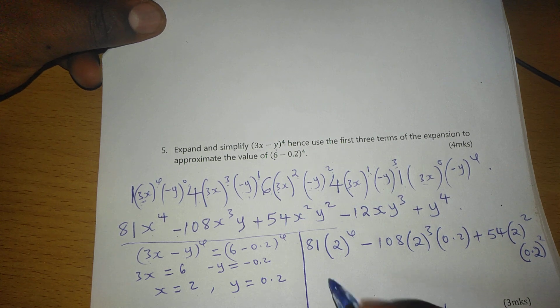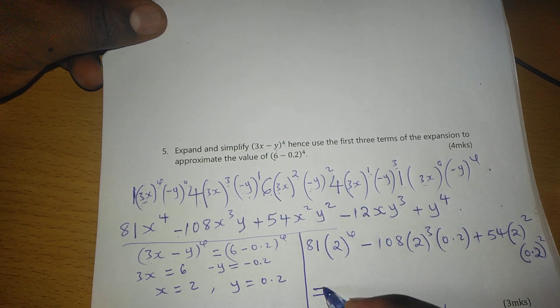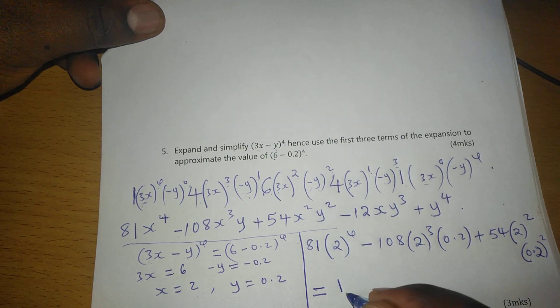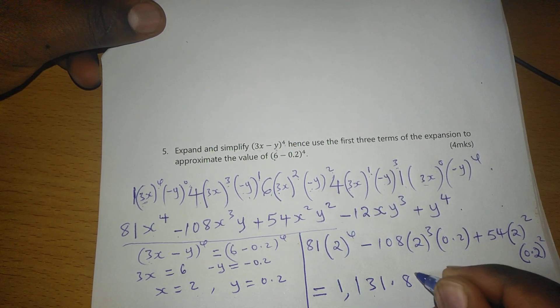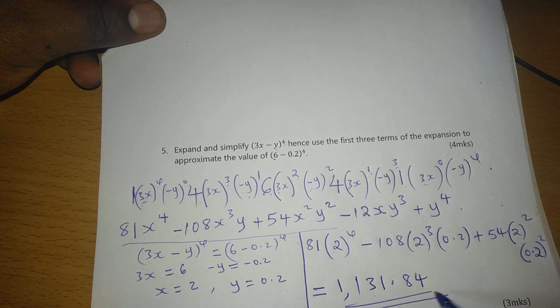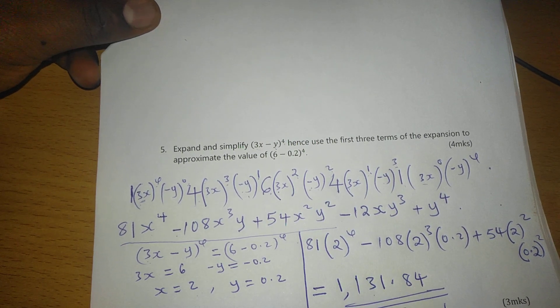So with this now, you can use your calculator properly with brackets and you get 1131.84 as the expanded form of (6 - 0.2)^4.